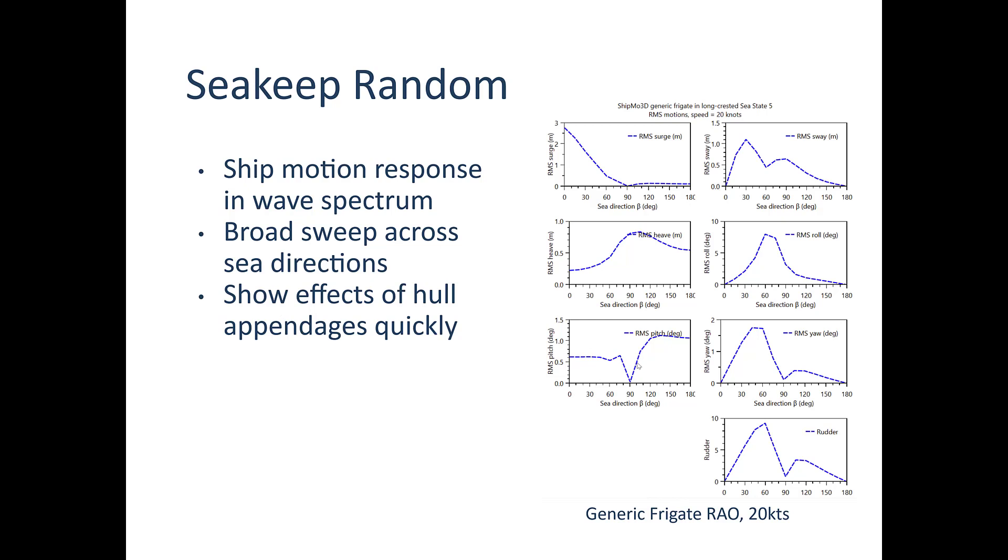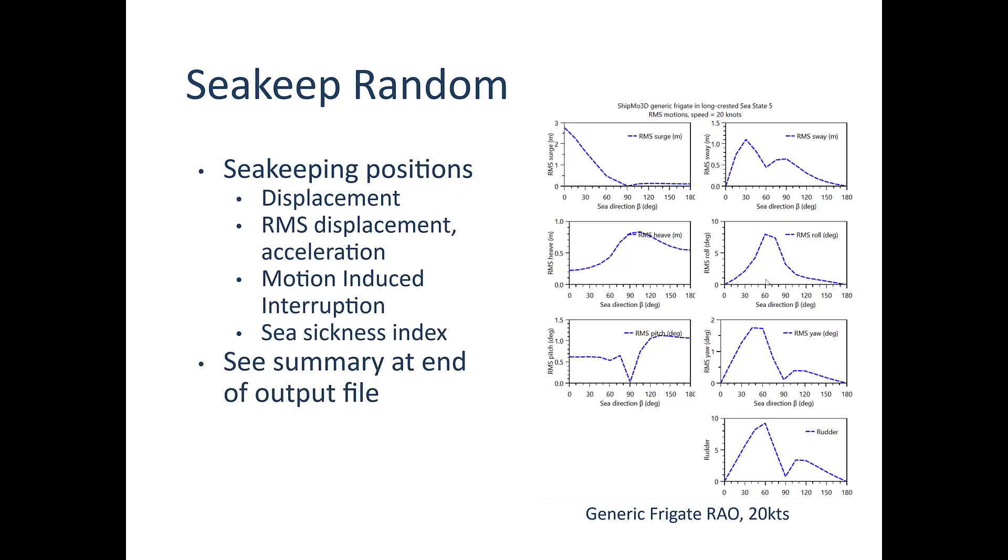And again, this is just another way of getting an idea of what the ship, you'd expect to see in terms of characteristics of motion in an actual seaway. Again, you can use seakeeping positions to get an idea of displacement, RMS displacement and acceleration, but also other parameters like motion induced interruption and seasickness index. You'll find these parameters in a summary at the end of the output file in SeakeepRandom.